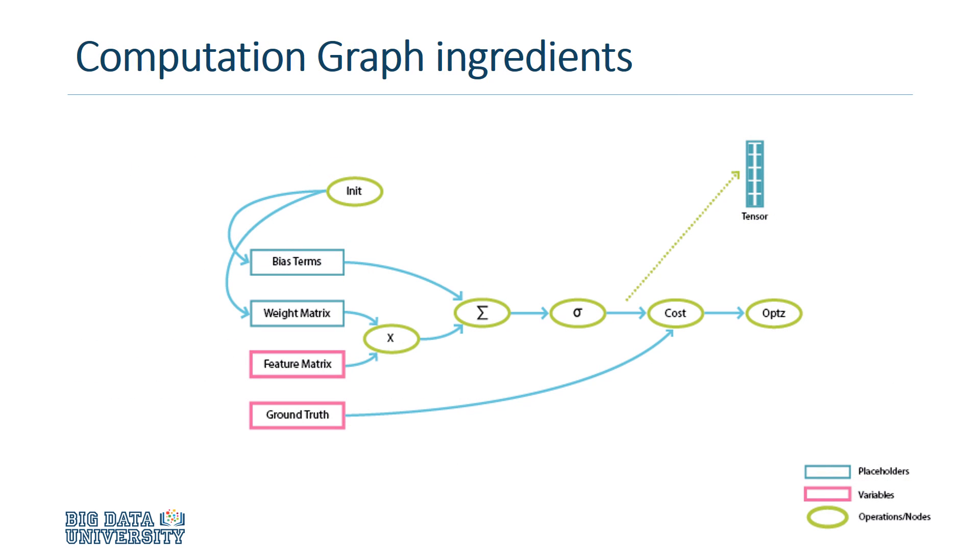Once the graph is built, an inner loop is written to drive computation. Inputs are fed into nodes through variables or placeholders. You can take a look at how that might work in the sample graph here.